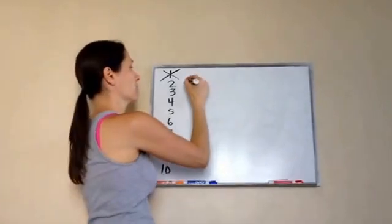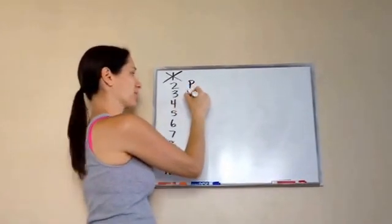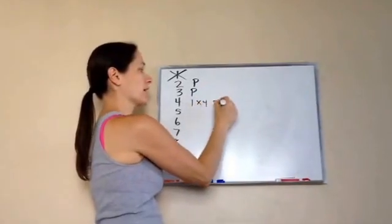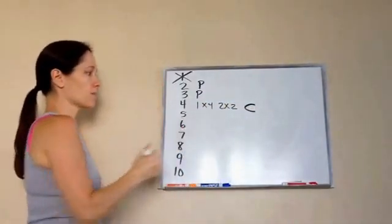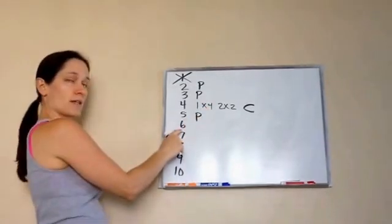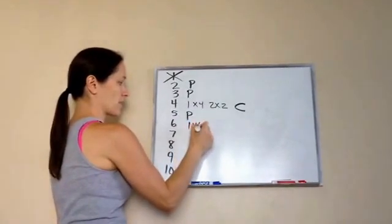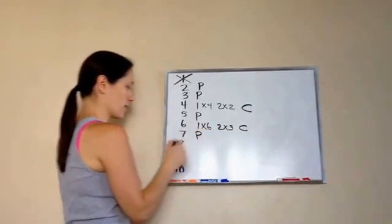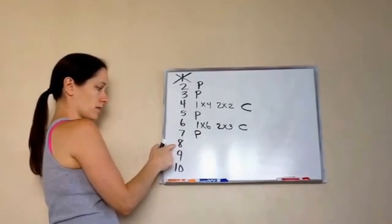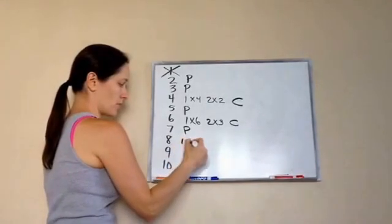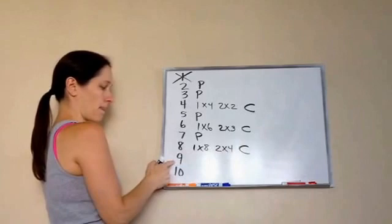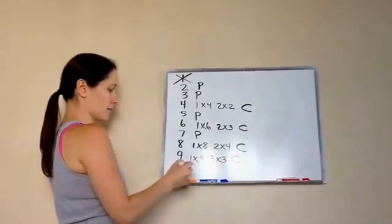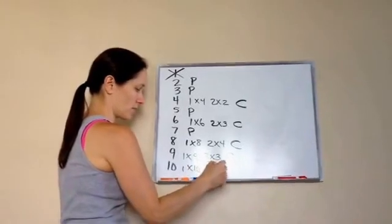2, that's prime. Very good. 3, prime. Very good, because it's only 3 times 1. 4, composite. Composite because we have 1 times 4 and 2 times 2. 5, prime, because it's 1 times 5. 6, composite. Why? Because it's 1 times 6 and 2 times 3. 7 is prime. Good. 8 is composite. Tell me some of the factors. 1 times 8, 2 times 4. Very good. 9, I think that's composite. Yeah, 1 times 9 and 3 times 3. Then 10 is composite. 1 times 10 and 2 times 5.